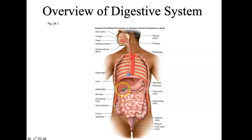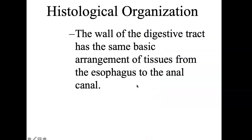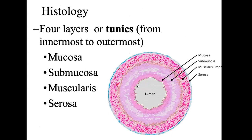Also, we have the liver, and we'll get to that in a little bit. So histologically, the wall of this digestive tract — all the way from the esophagus to the other end — has the same basic arrangement of tissues. If we could do a cross-section, it would look like in the diagram here, and you would have four layers, or we call them tunics.